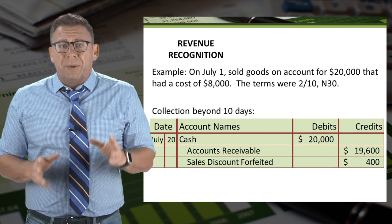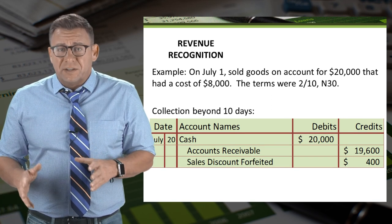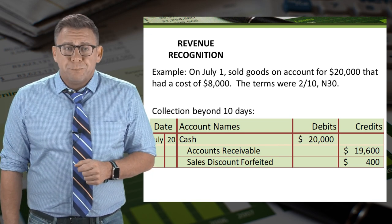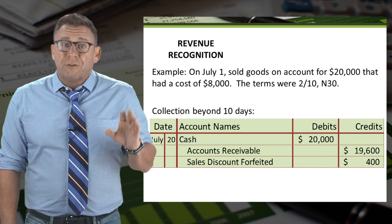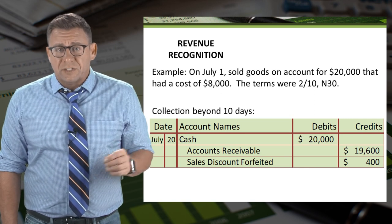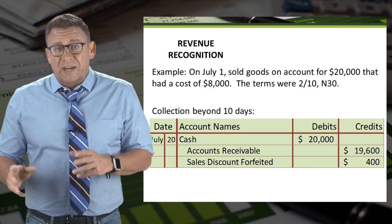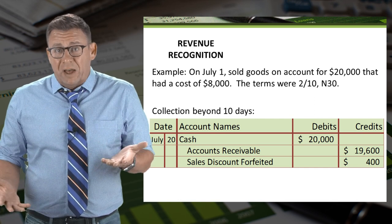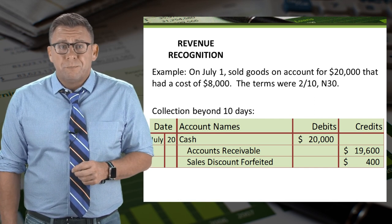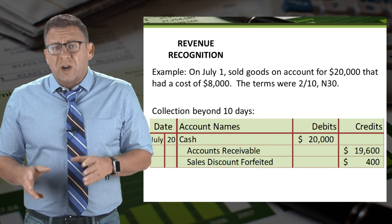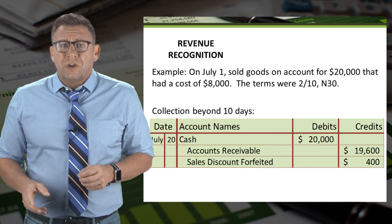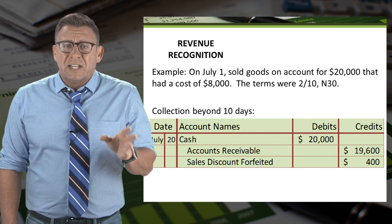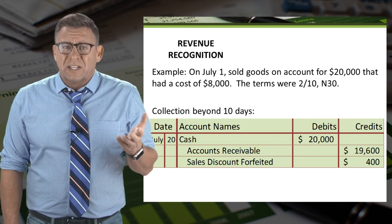On the rare occasion that a buyer pays beyond the discount period, the journal entry is slightly more complicated. We must debit cash for the full amount received of $20,000. We still credit accounts receivable for the $19,600, since that's the amount that we originally recorded. The difference of $400 is recorded to an other revenue account called something like sales discount forfeited or sales discount lost.